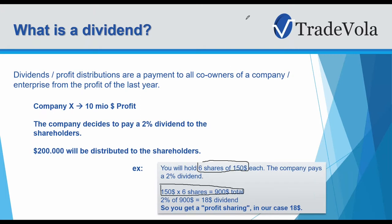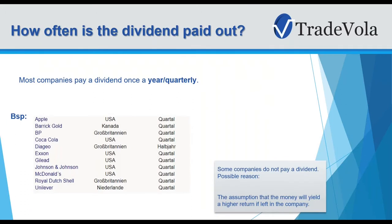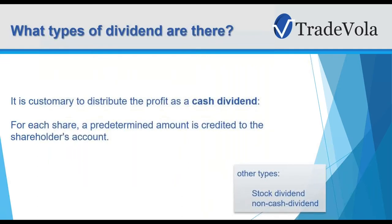Most companies pay dividends once a year or quarterly. In the US it's generally every three months; in Germany, for example, it's once a year. If a company pays 2% dividends per year quarterly, you won't receive the full 2% every three months — they divide it into four portions, so 0.5% is paid out every three months, and the sum of these four payments equals the total annual dividend.